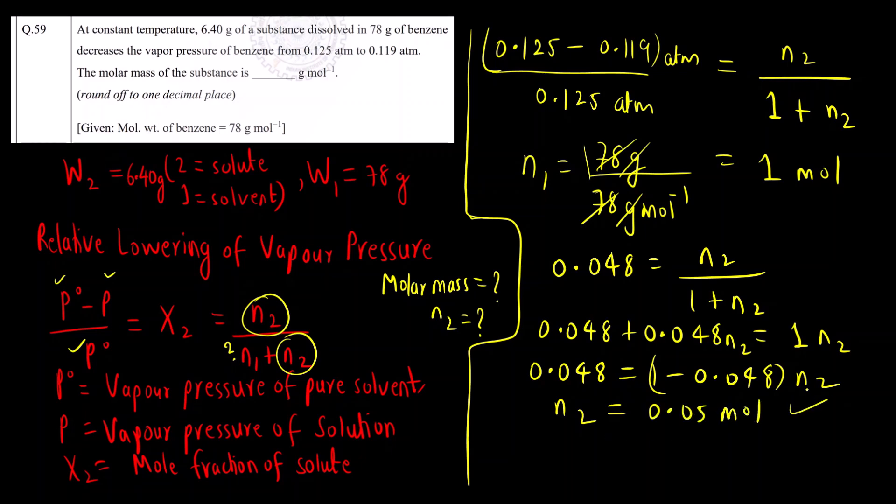Now we have moles and the mass of the solute, so we can find the molar mass. Molar mass will be mass upon moles. Mass is 6.40 grams divided by moles 0.0504. The answer is 126.98 grams per mole.